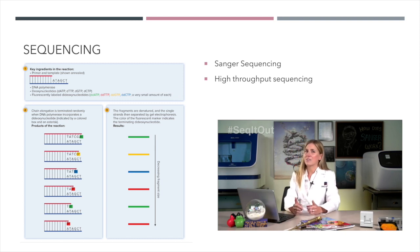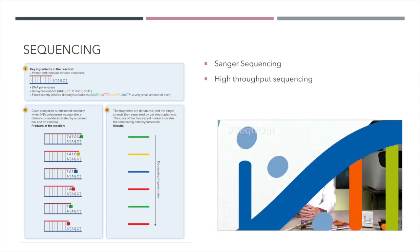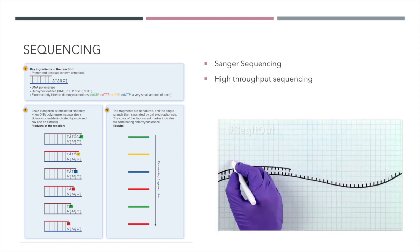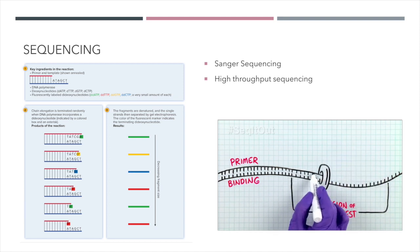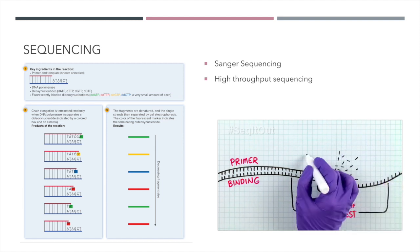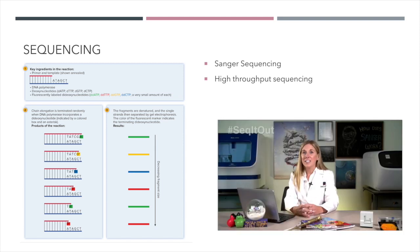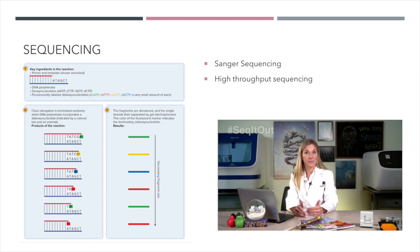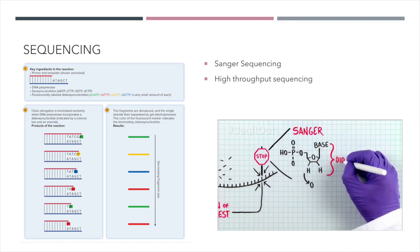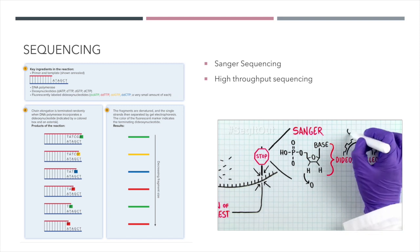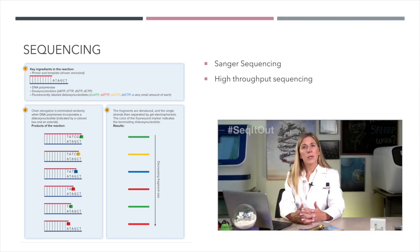The basics of Sanger sequencing start with a short primer binding next to the region of interest. In the presence of the four nucleotides, the polymerase extends the primer by adding the complementary nucleotide from the template DNA strand. To find the exact composition of the DNA sequence, we need a defined stop — Sanger did this by removing an oxygen atom from the ribonucleotide, creating a dideoxide nucleotide, which is like throwing a wrench into a gear — the polymerase can no longer add normal nucleotides into the chain.